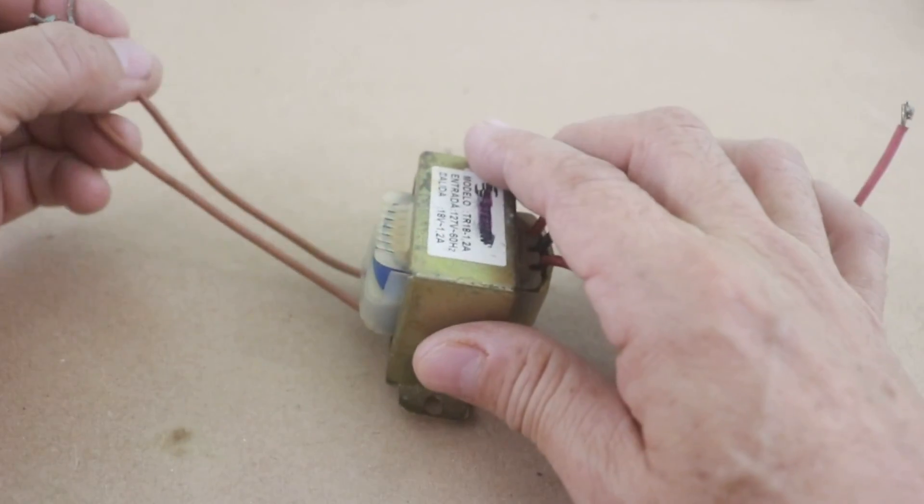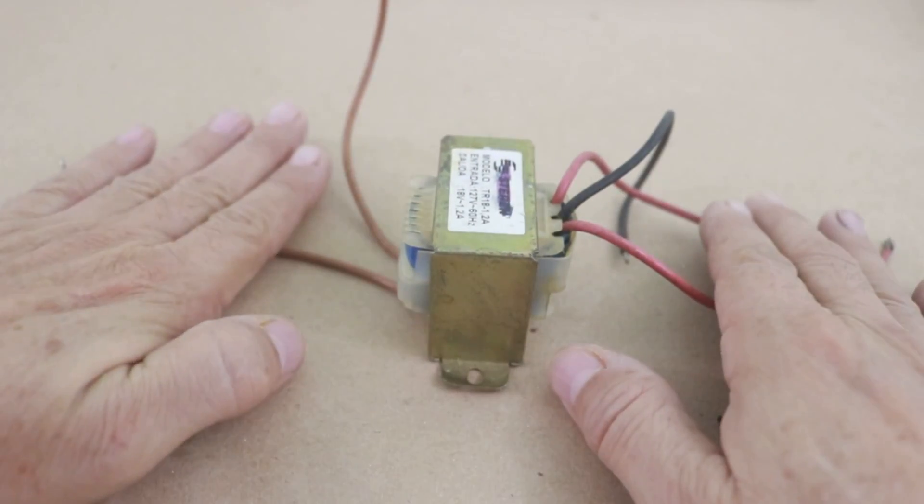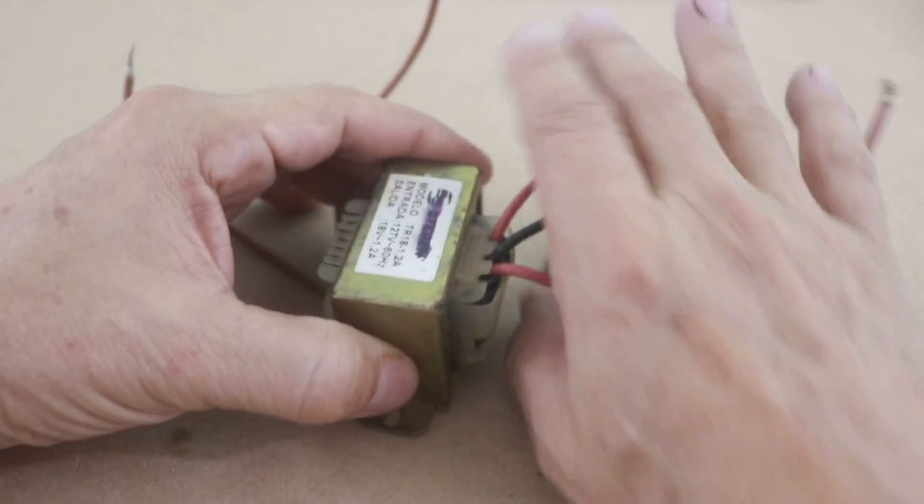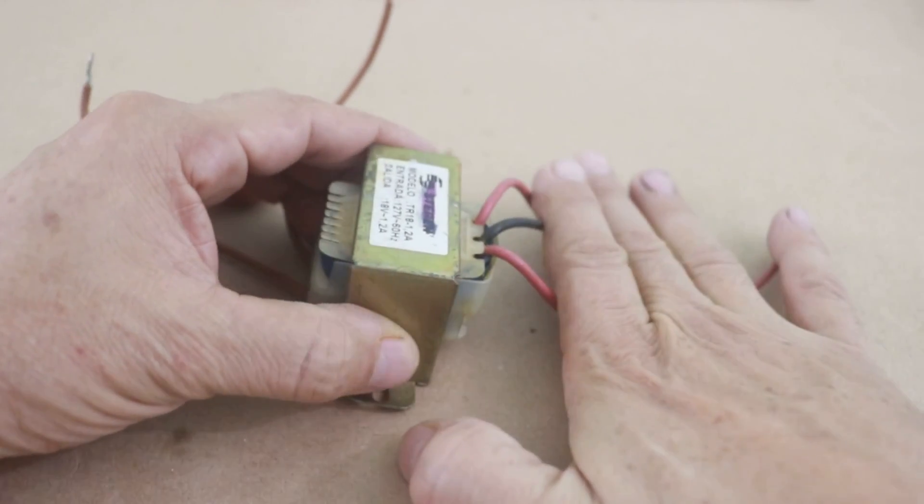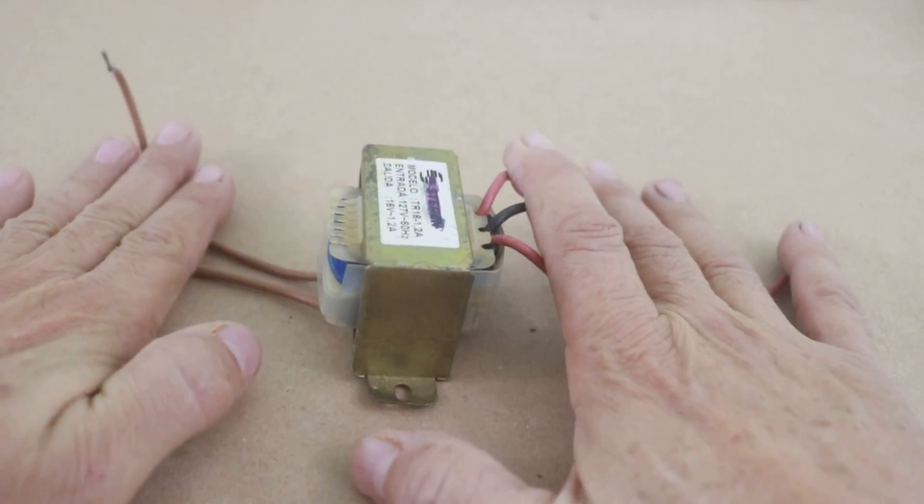So if you have in your primary the wall tension 120 volts and in the secondary in this case is 18 volts, here you have low voltage that is independent from the high voltage at the input.